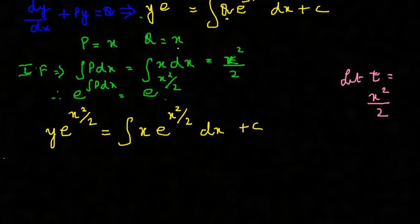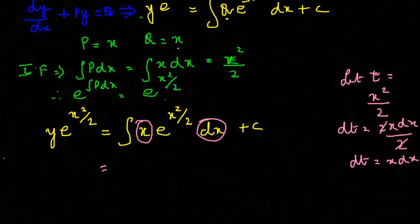What I am going to do here is assume some variable t be equal to x squared by 2. If you substitute this, let us first differentiate it. Therefore dt will be equal to 2x dx by 2, and your 2 and 2 get cancelled, therefore dt is equal to x dx. Now if you substitute here, this x dx becomes dt, and e power x squared by 2 becomes e power t.